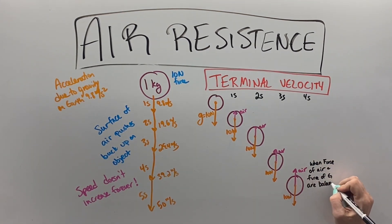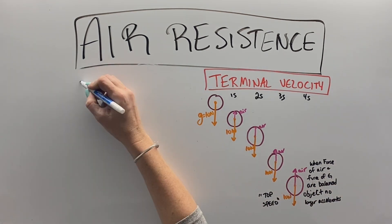And we consider this the top speed of an object, and this is what's called terminal velocity. And it's due to the air resistance pushing back.